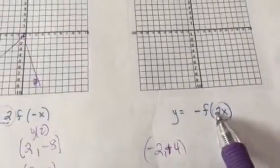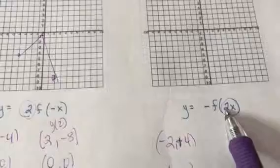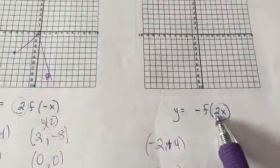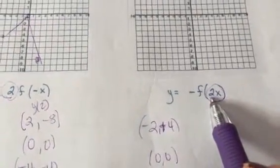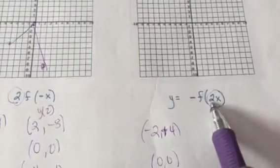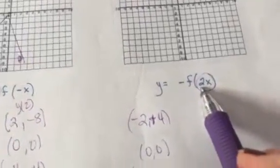Here you would think it would make it twice as wide and you'd multiply by 2. No, you do the opposite of what you think. You don't multiply by 2, you do the opposite. You divide by 2. So I'm going to take all my x values and I'm going to half them or divide by 2.